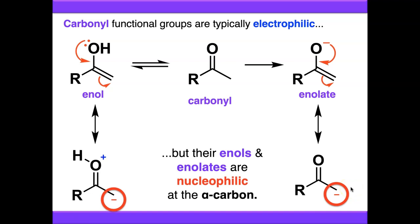If we expose these enols and enolates to an electrophile, we can use these as a nucleophile to form a new bond to something that's now electrophilic. Whereas our parent carbonyl compound will react with nucleophiles to form new bonds at the carbonyl carbon, we can convert our carbonyl compound into an enol or an enolate, and it will then react with electrophiles to form new bonds at the alpha carbon.